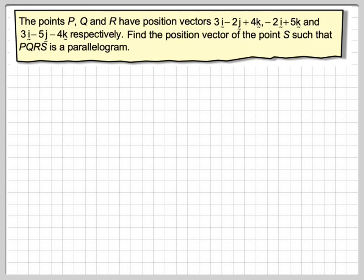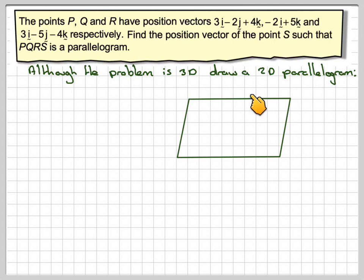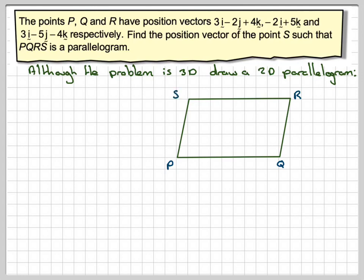This is actually a three-dimensional problem, but it's best, first of all, to look at it as a two-dimensional problem. So just draw a parallelogram in two dimensions, and then as long as you do your labelling properly — calling the vertices P, Q, R, S — it doesn't matter which way around you go, but traditionally we go anticlockwise: P, Q, R, S.